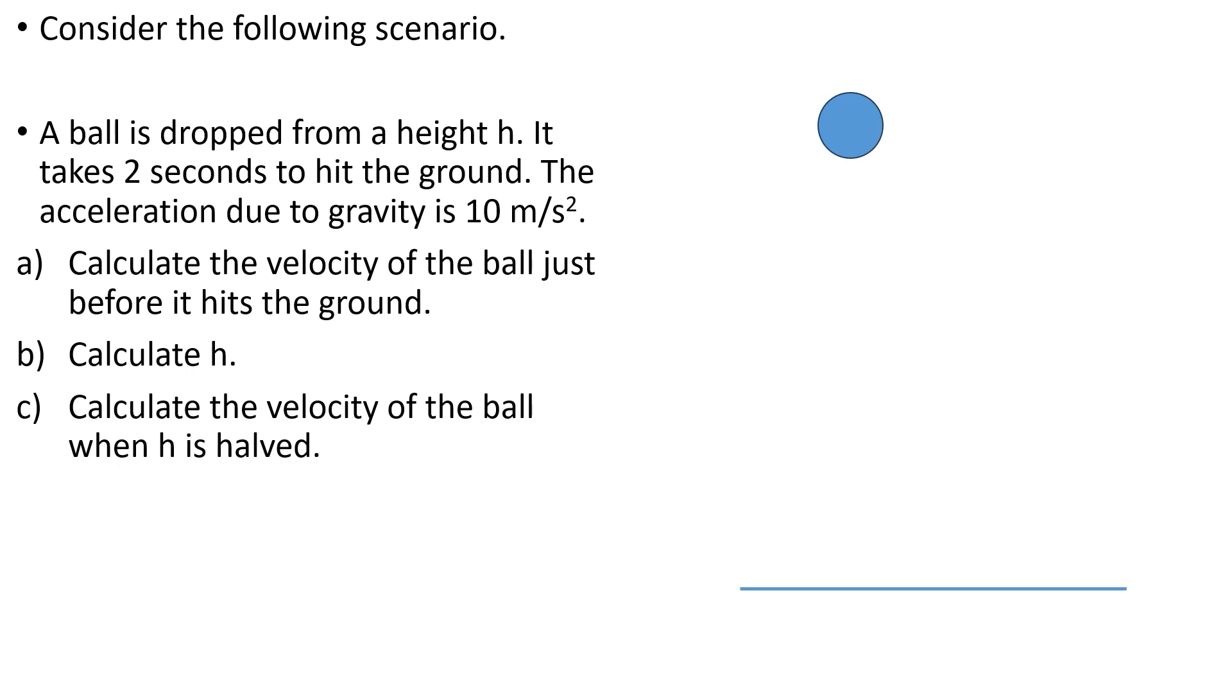Next we are asked to find the velocity of the ball when height has been halved, so we draw the ball at half of h. There is no need to measure exactly half of h. As long as it looks visually accurate will do. Finally, we are asked to find the velocity of the ball just before impact, so we draw the ball just before it hits the ground.